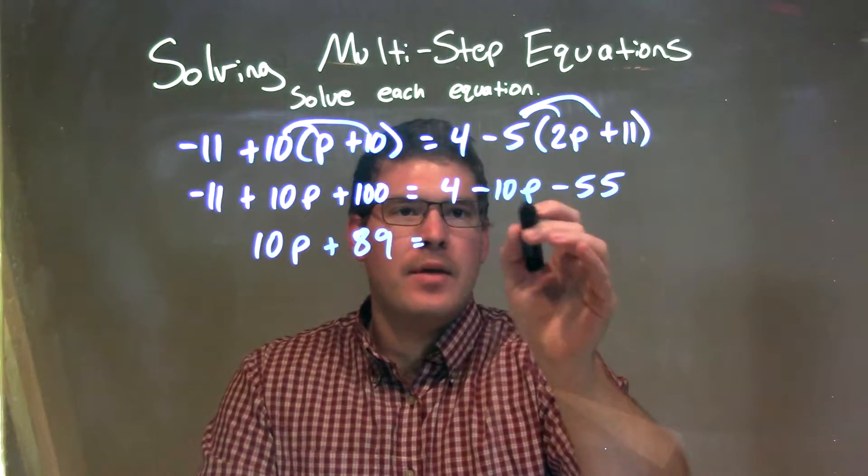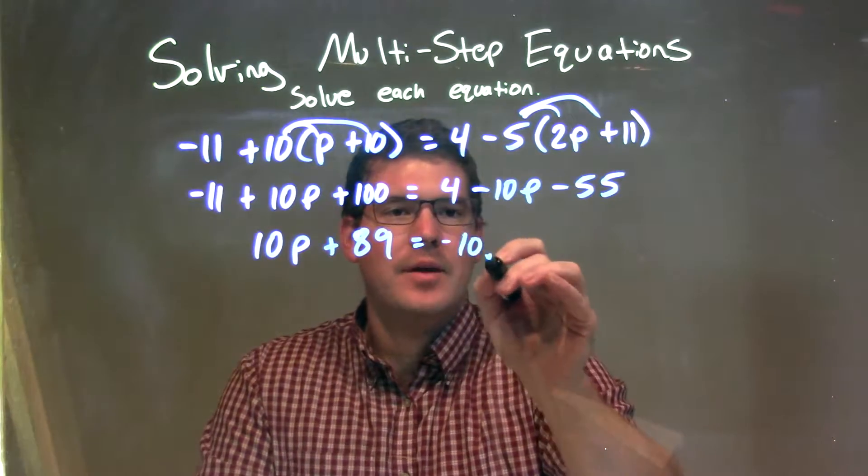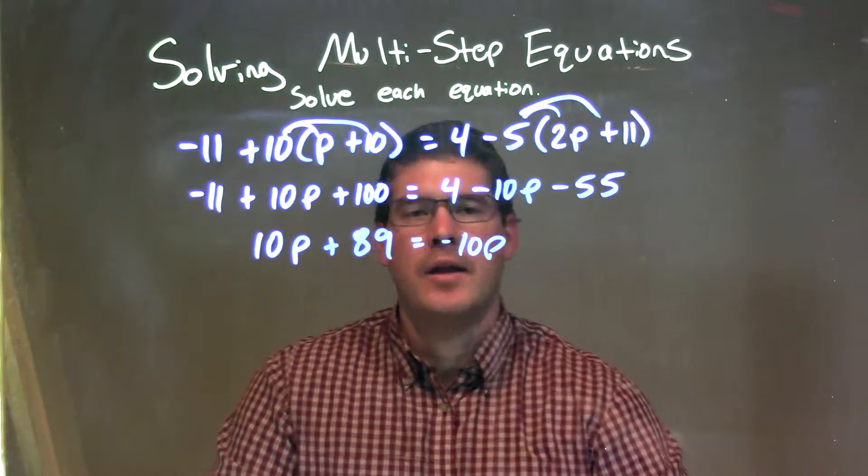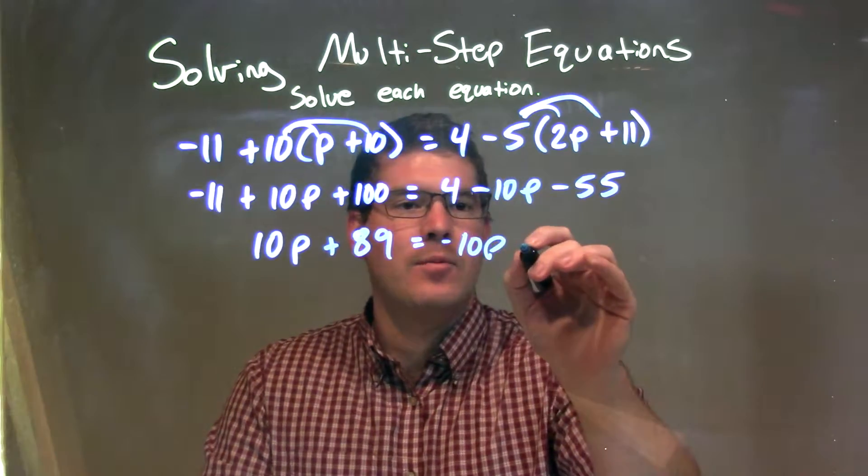Same thing on the right. The negative 10p brings down here, negative 10p. And then we have a 4 and a minus 55. That can come together to be minus 51.